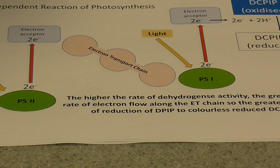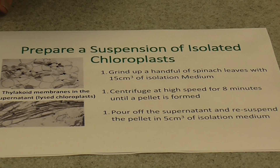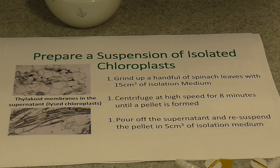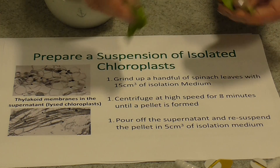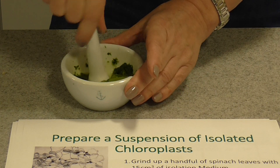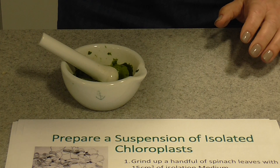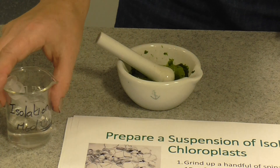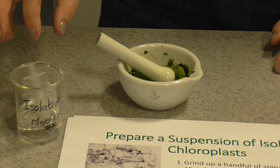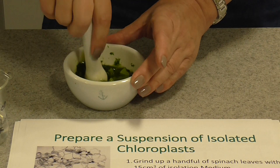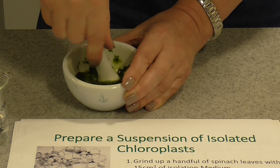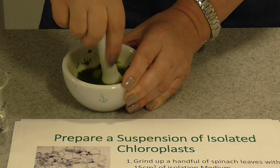The very first thing you need to do is prepare a suspension of isolated chloroplasts. Get yourself a pestle and mortar — I've just got a bag of spinach from the supermarket. Tear your spinach leaves up, put them in the mortar, add a pinch of sand, and add 20 centimetres cubed of isolation medium. Then grind up your spinach leaves; this will break open the cells and release the chloroplasts. You can also do this on a larger scale in a blender.